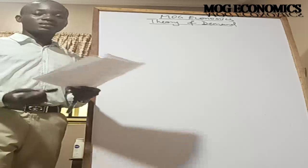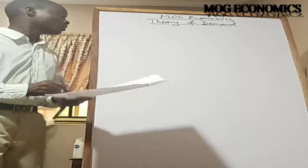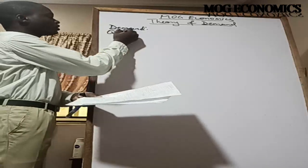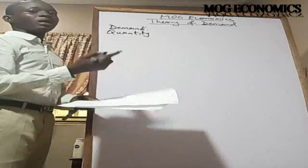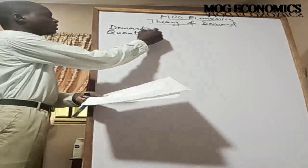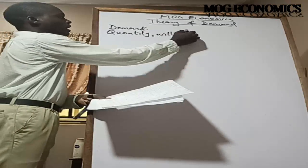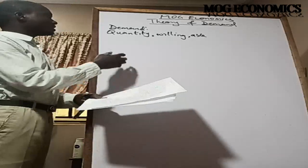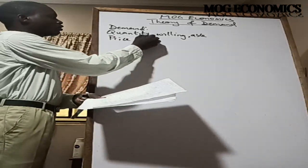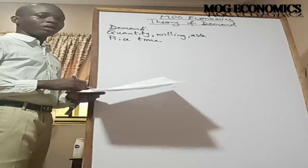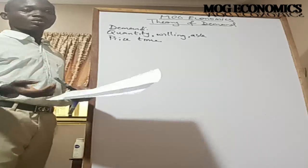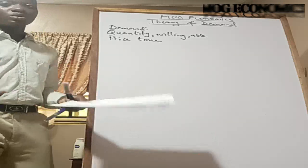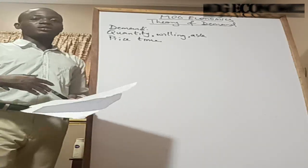Demand refers to the quantity of goods and services — that is very important — that a consumer is willing and able to buy at a given price and at a particular time. So you don't define demand as simply when somebody buys something. Demand is the quantity of goods and services that a consumer is willing and able to buy at a given price and at a particular time.